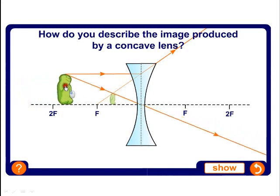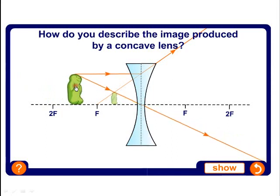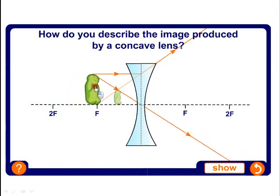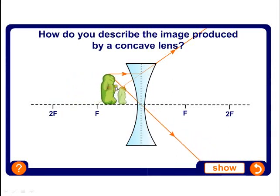If we move our little jelly baby towards the lens you'll notice that between F and 2F still the same properties, and even when we go closer to the focal point it's still diminished, it's still erect, and it is still a virtual image.